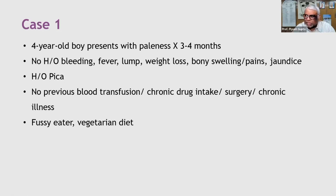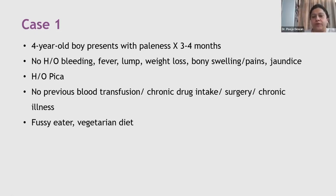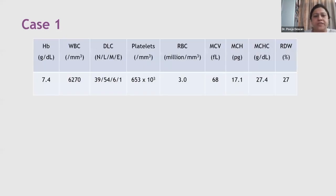Based on this clinical scenario, students in the chat are unanimously saying iron deficiency anemia, which is correct. But is it solely iron deficiency anemia, or could it be something else? Looking at the CBC: the hemoglobin is 7.4, which is low for age — so the child is anemic. The WBC count and DLC appear normal for age.